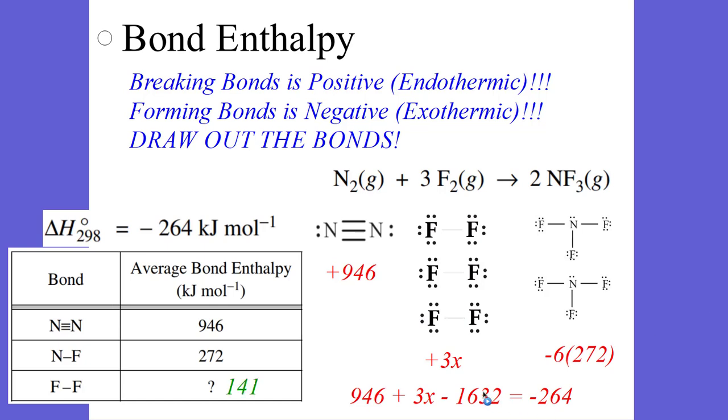We do a little bit of algebra, and we find out one of these bonds, the x is equal to 141 kilojoules per mole. That's bond enthalpies.